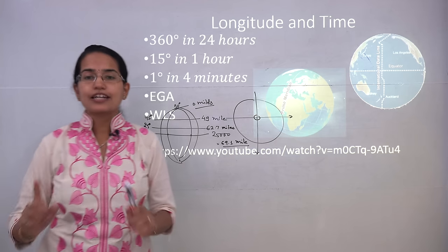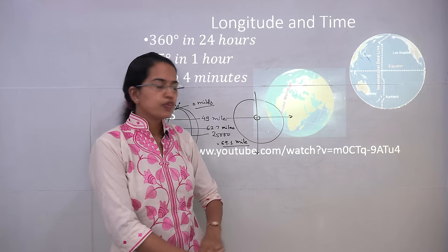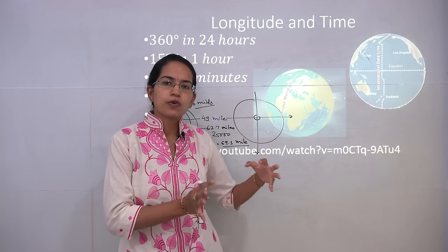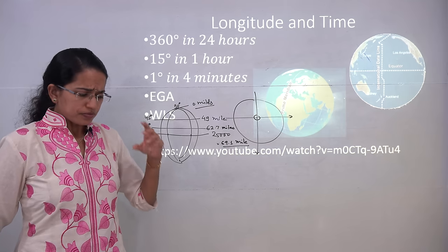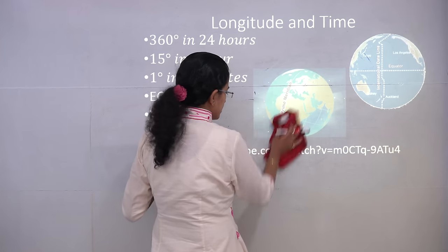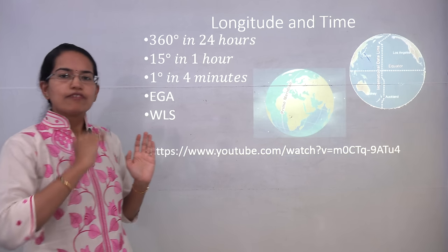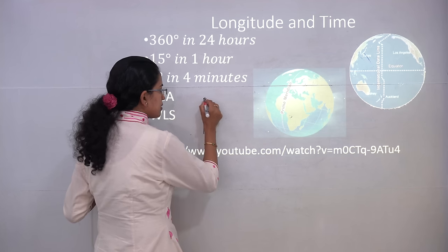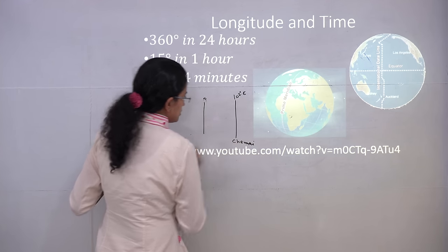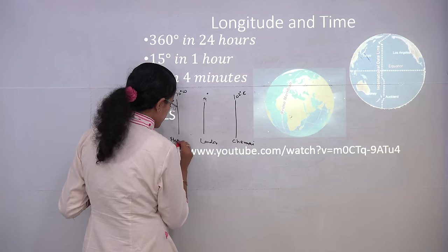Zero degrees longitude is the Prime Meridian, defined by the Royal Observatory at Greenwich. Moving east or west from zero degrees, you gain or lose time. For example, India is around 82 degrees east, Chennai is further east, and New York is nearly 70 degrees west of London. When it is 12 noon in London, it would be approximately 7 PM in Chennai and 7 AM in New York. So when a person in London is having lunch, the person in Chennai would be having dinner, and the person in New York would be having breakfast.